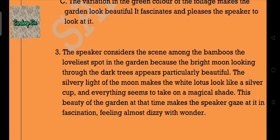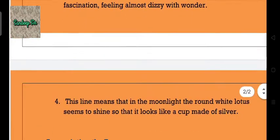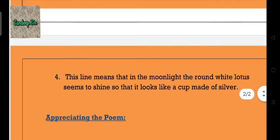This beauty of the garden at that time makes the speaker gaze at it in fascination, feeling almost dizzy with wonder. Answer 4: This line means that in the moonlight the round white lotus seems to shine so that it looks like a cup made of silver. So 'Understanding the Poem' is complete.